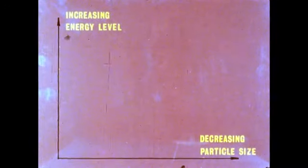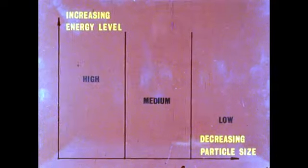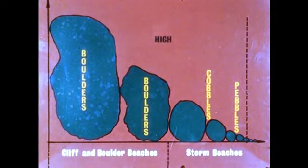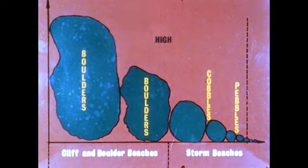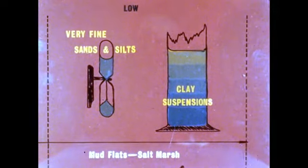Diagrammatically, we may show increasing energy levels vertically and decreasing grain size from left to right. We can divide the sediments into three main groups: high energy, medium energy, and low energy. The high energy materials are the large and small boulders, the cobbles and the pebbles, forming the environments of the cliff, boulder, and storm beaches. The medium energy materials are the coarse sands grading through to the fine sands, making up an environment of sandy beaches backed by wind-blown dunes. The low energy materials are the fine sands and silts, which together with the clay suspensions, make up the environments of the mud flats and salt marshes.